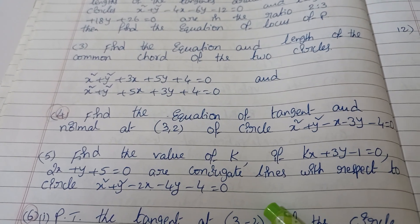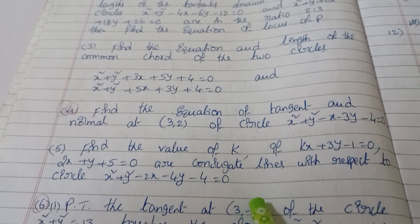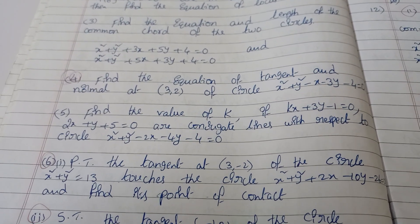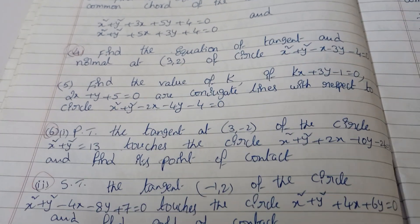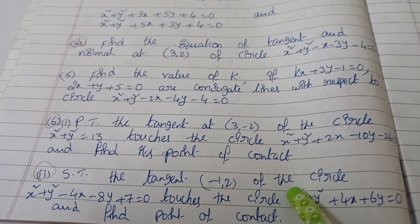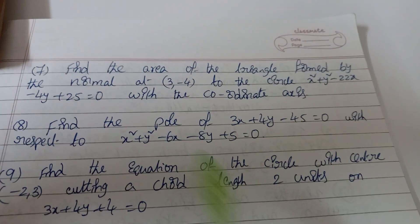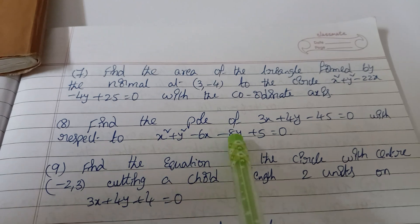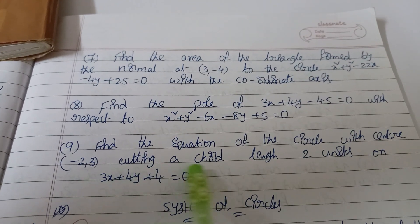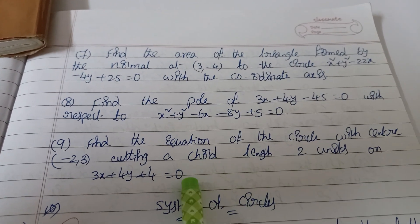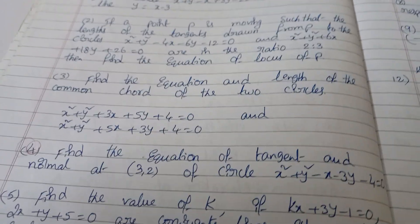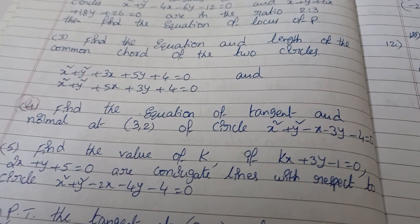Next: if given lines are conjugate with respect to a circle, find the value. Next: prove the tangent — same model, two questions. Next: find the area of the triangle formed by the normal. Next: find the pole, find the chord intercepted of given length on a line. These questions may be seven marks or four marks — I've covered both seven mark and four mark important questions in circles.